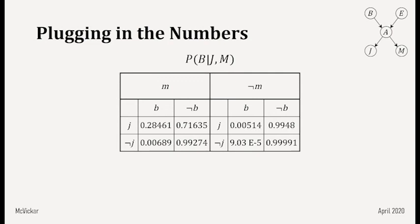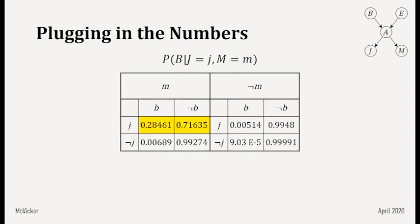We were given evidence that J is true and M is true. So we look up where J is true and M is true in the table and pull out the probability distribution of B. That's our final answer: there's a 28% chance that B is true and a 72% chance that B is false.